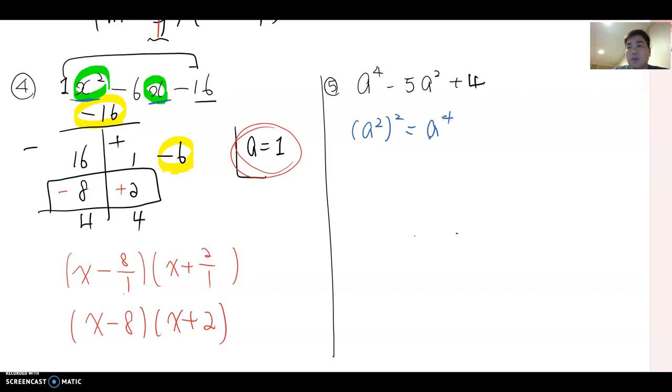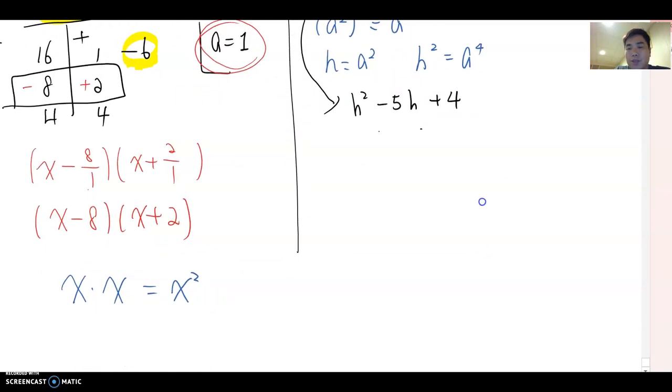We can say this is also a trinomial. To make it a little bit easier to see, I am going to temporarily make h equal to a squared. Then what about h squared? Then there will be a to the fourth powers, right? So now we can rewrite this trinomial temporarily. h squared minus 5h plus 4. Now let's factor this trinomial.